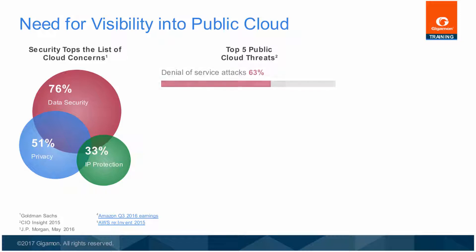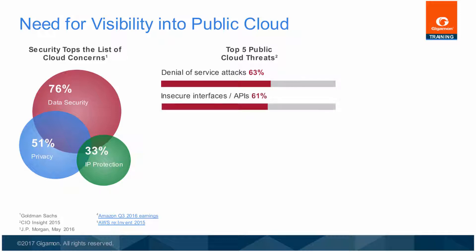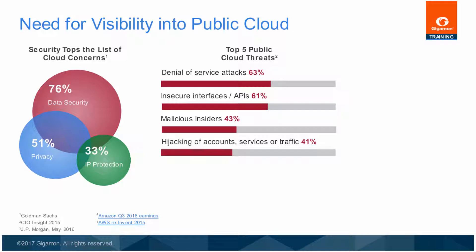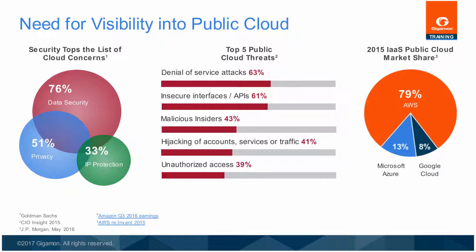The top five threats are: Denial of Service Attacks at 63%, Insecure Interfaces and APIs at 61%, Malicious Insiders at 43%, Hijacking of Accounts, Services or Traffic at 41%, and Unauthorized Access at 39%. When looking at the public cloud market share in the IaaS space, Amazon Web Services, or AWS, represents the largest market share, with Microsoft Azure and Google right behind it. As recently as 2015, AWS captured 79% of the public cloud market share with over 1 million enterprise customers, and is on track to generate over $10 billion in revenue.